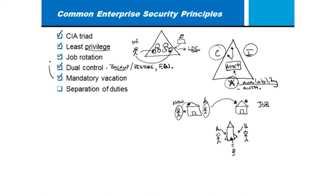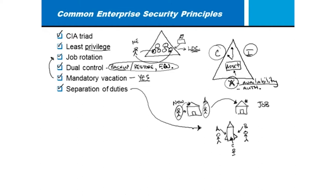Mandatory vacation ties back to job rotation: if I make it mandatory that you take a solid week off, an assistant manager can come in and look at how you manage the systems. The backup/restore and firewall examples are the best illustrations of dual control. The rocket ship analogy is more about separation of duties — to me they go hand in hand. The idea is that it takes more than one person to do certain jobs. Some might say it's inefficient, but what you're doing is investing in your security.